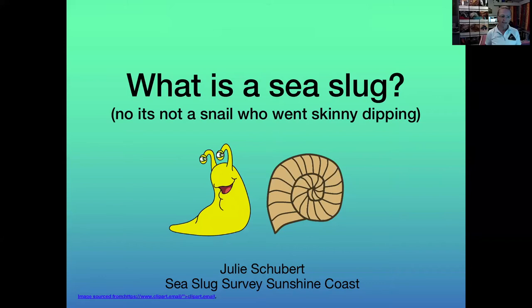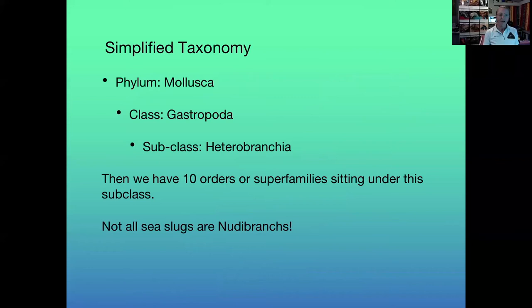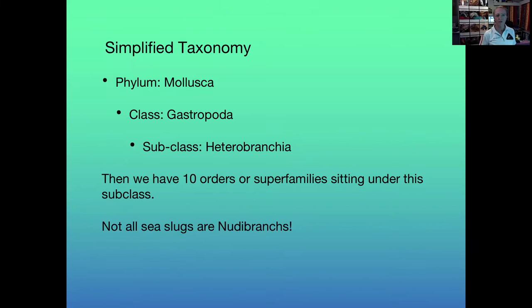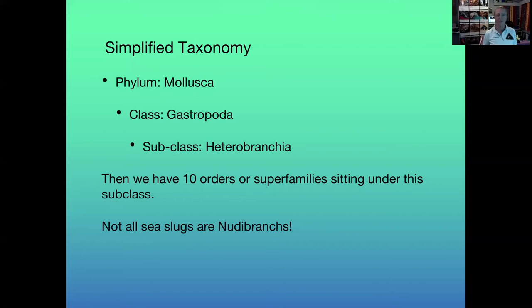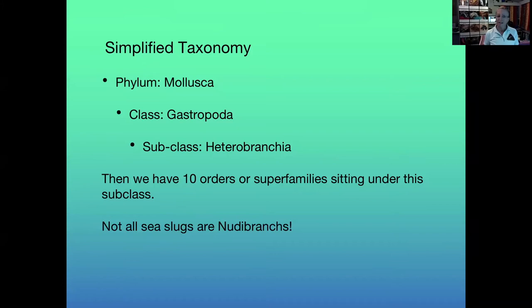Simplified taxonomy: sea slugs is a common name applied to members of the Heterobranchia, which falls under the class Gastropoda in the phylum Mollusca. So they're related to molluscs — all your other shelled animals like clams and cowries — but slugs have evolved slightly differently: some still have their shells, some have lost them, and some have internalized them. A lot of people refer to sea slugs as nudibranchs, which is not technically correct. Nudibranch comes from Latin — 'nudi' means naked and 'branch' means gill — and Nudibranchia is only one order of Heterobranchia.